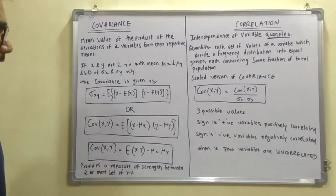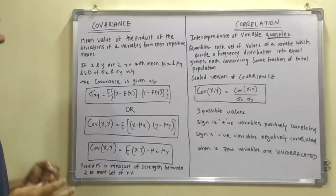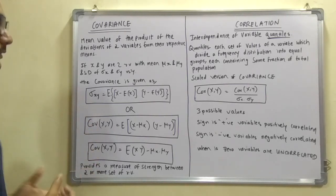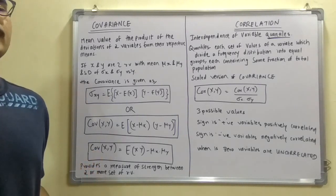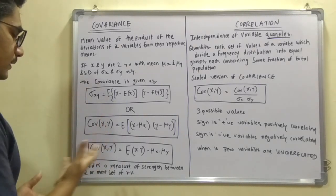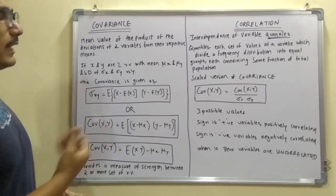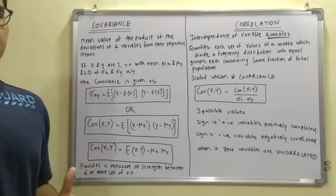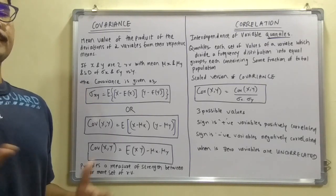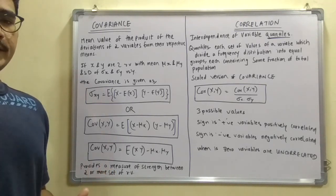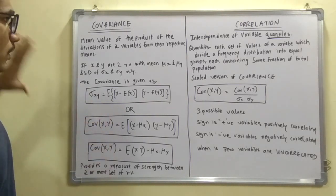Covariance is used to provide a measure of strength — it denotes the relationship between two variables in a particular set of random variables. It can also be used for depicting the dependency between the two variables when solving an equation.